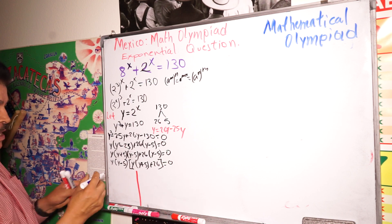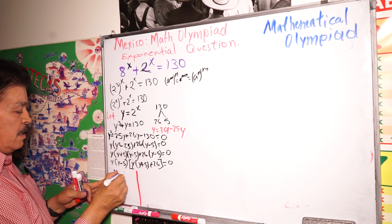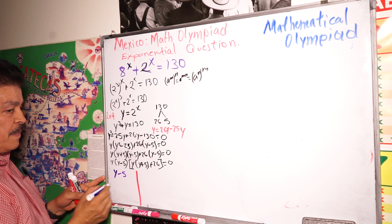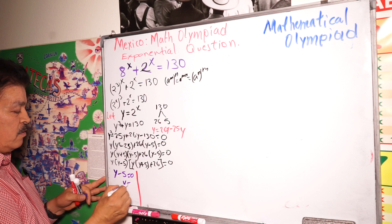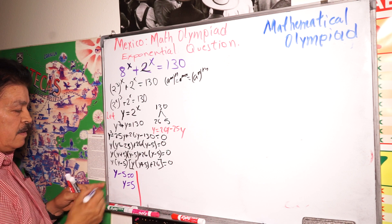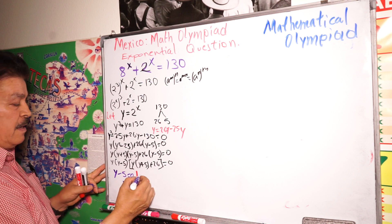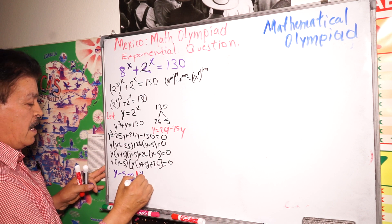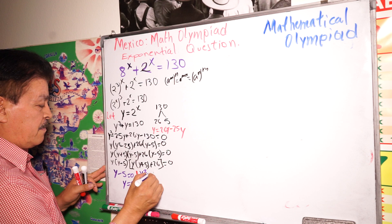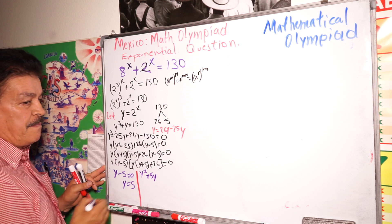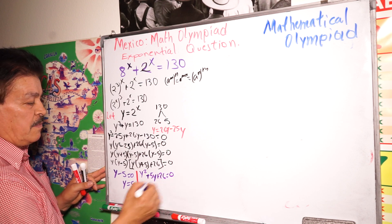Factoring out the common factor Y minus 5, we get two parts. This side gives Y minus 5 equals zero, so Y equals 5. The other side gives the quadratic Y squared plus 5Y plus 26 equals zero.